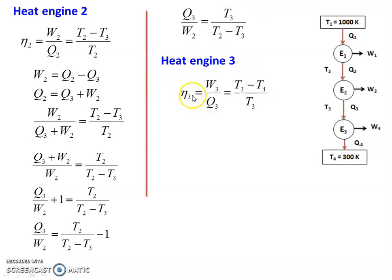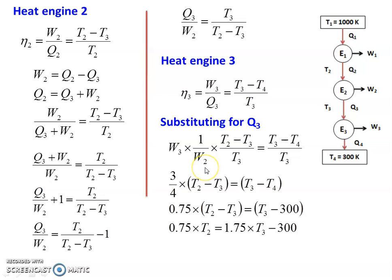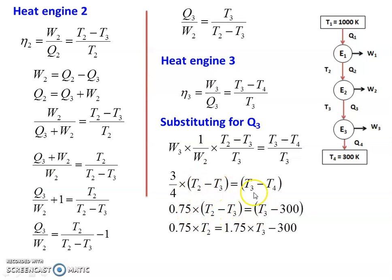For engine 3: Eta 3 equal to W3 by Q3, and the temperature ratio gives T3 minus T4 divided by T3. Substituting for Q3: W3 into 1 by W2 into T2 minus T3 divided by T3 equal to T3 minus T4 divided by T3. T3 cancels. With W2 by W3 equal to 4 by 3, so W3 by W2 equal to 3 by 4 equal to 0.75. Therefore 0.75 into T2 minus T3 equal to T3 minus T4 equal to T3 minus 300, giving 0.75 T2 equal to 1.75 T3 minus 300.